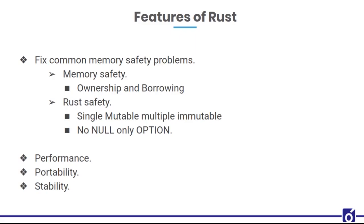Next is performance. Rust can build a binary which can directly run on the bare metal, so its performance is very high. Next is portability and scalability. In every 6 weeks a new stable version of Rust is released which fixes most problems, making it more stable than other languages.